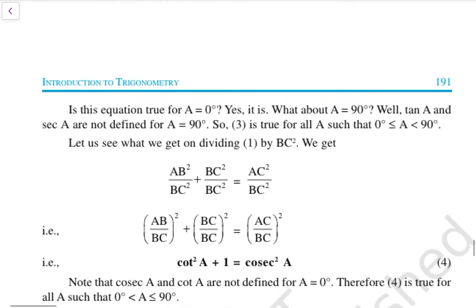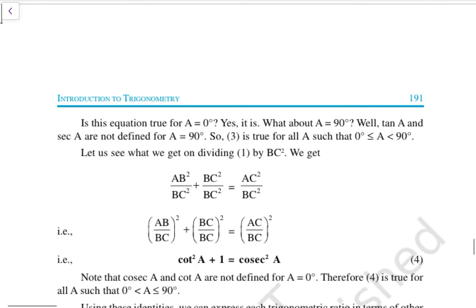Is this second identity true for A = 0°? Yes, it is. What about A = 90°? Well, tan A and sec A are not defined for A = 90°. So this identity is true for all A such that 0° ≤ A < 90°.